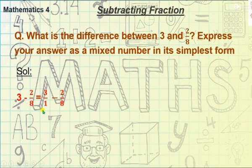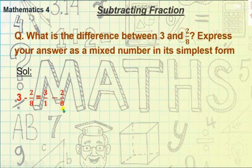It doesn't make any change in the number 3. So we have 3/1 minus 2/8. Now, as our first step says, we need to make the denominators the same, but here the denominators are not the same.